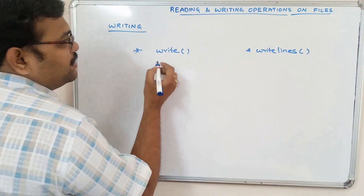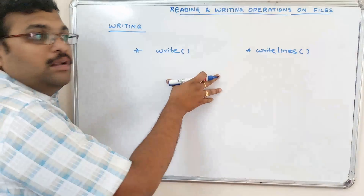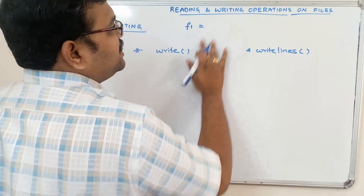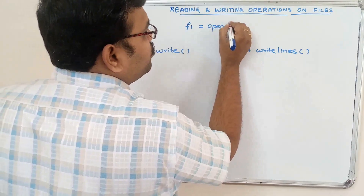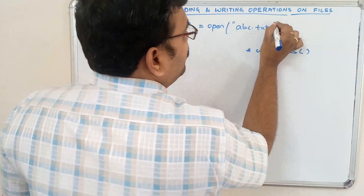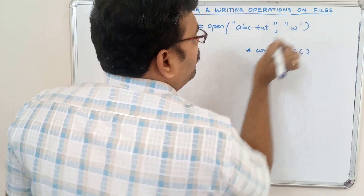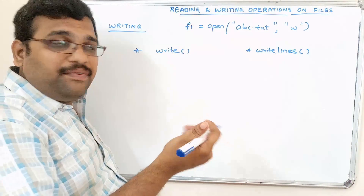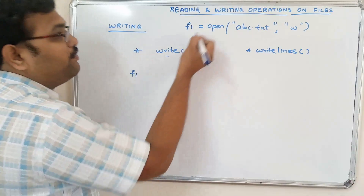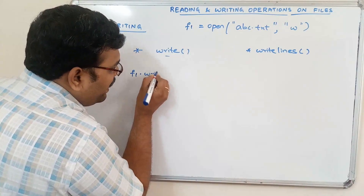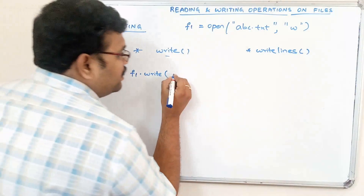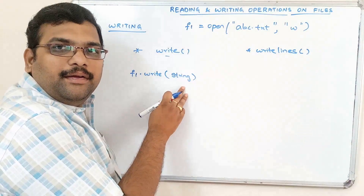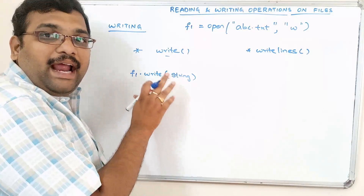Before using these two functions we have to open the file. The syntax from the previous session is: f1 = open('abc.txt', 'w'). If you want to write content into a file, use the file pointer: f1.write(). This takes one argument — a string. Whatever we want to write into the file should be passed as that string argument.